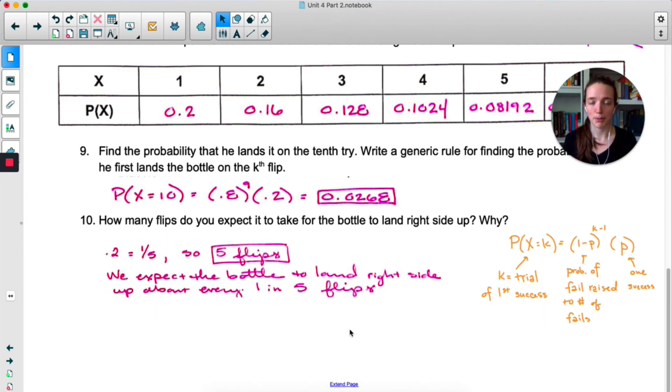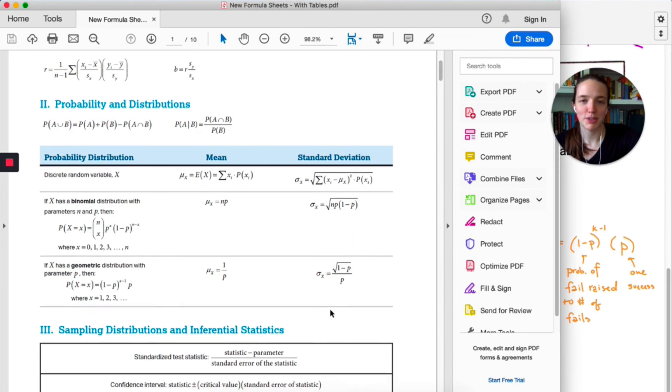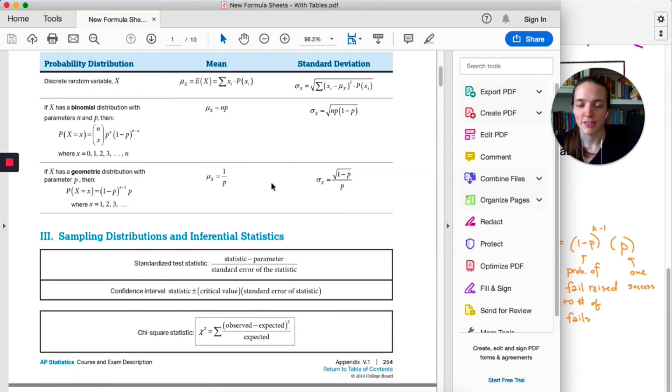Probability of success is 1 fifth, so probably five flips. We expect the bottle to land right side up in about one of every five flips. We probably have to see five flips in order to see one land. This is actually the formula for mean for a geometric setting. The mean of X is just 1 over the probability, 1 over P. So here our probability was 0.2. 1 over 0.2 is 5. This is on the formula sheet. How many times have I said don't memorize it? It's on the formula sheet. So here's the mean for a geometric distribution. And look, they even give you this formula, which I think is a waste of space because as previously mentioned, it's pretty straightforward. And they give you the standard deviation here as well. So no need to memorize.